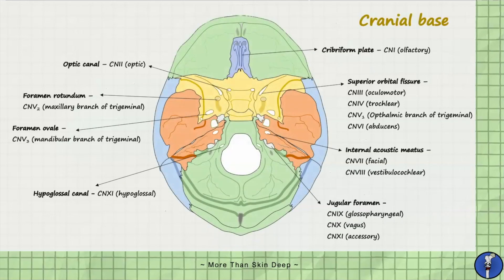Here is a diagram showing important foramina within the cranial base, which allow cranial nerves to either enter or leave the cranial cavity. We'll be covering this in greater detail in our upcoming tutorials, where we'll take a closer look at each cranial nerve in depth.